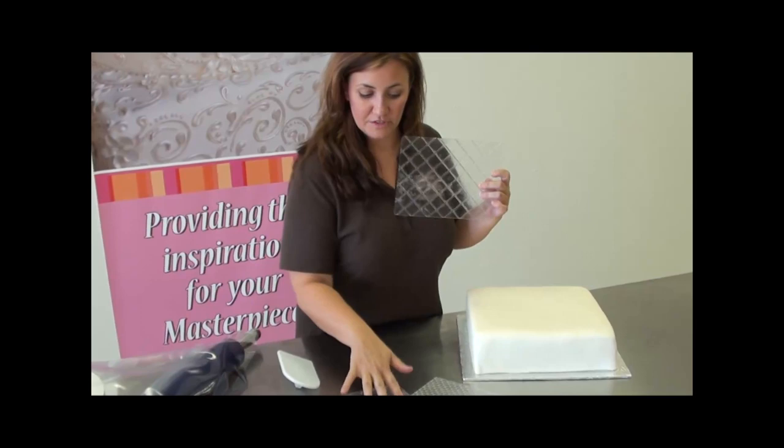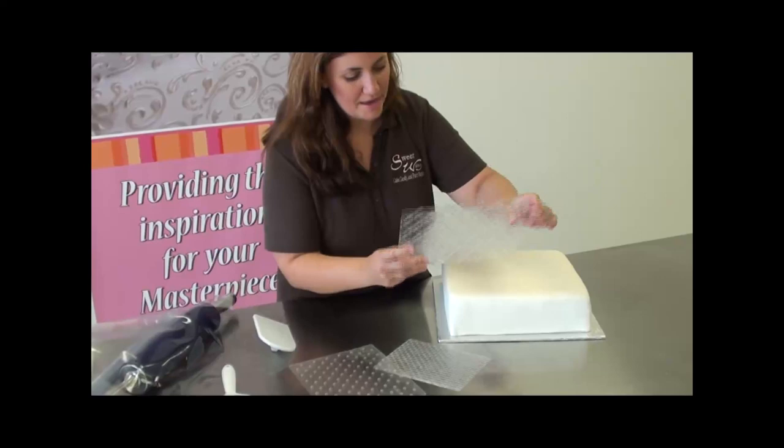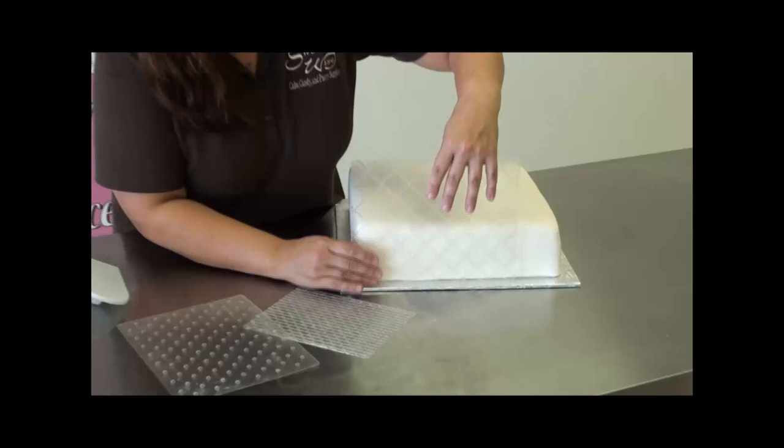All you want to do is take the impression mat and put the raised side towards the fondant. Just press it down to the board so that it's nice and level, and give a good firm push against the cake.